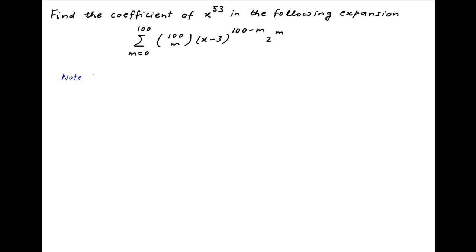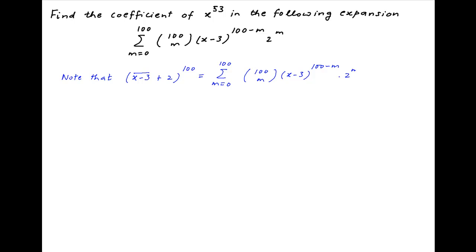We begin by noting that the binomial expansion of (x - 3 + 2)^100 is equal to the summation of 100 choose m, multiplied by the first term (x - 3)^(100 - m), multiplied by the second term 2^m, where m varies from 0 to 100. Notice that the right-hand side is the same as the expression given in the problem.